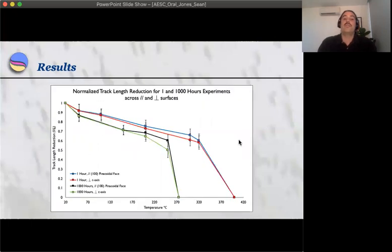Here we have a graph showing normalized track length reduction for 1 and 1000 hour experiments across parallel and perpendicular surfaces. Once again, we have temperature in degrees Celsius on the x-axis. On the y-axis we have normalized track length reduction. And again, each one of these points represents the annealing experiment for each orientation.